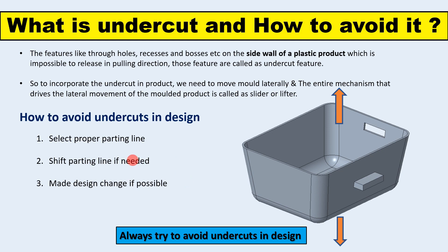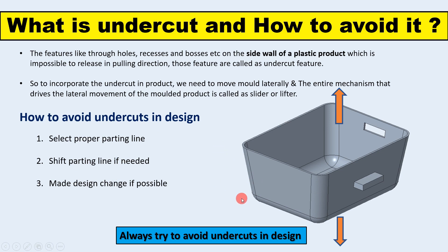We also need to make design changes if possible. For example, if a recess is in the middle, if you cut out the upper portion completely, it will no longer be an undercut. So if possible, we can make design changes to eliminate undercuts. We always try to avoid undercuts in the product design.